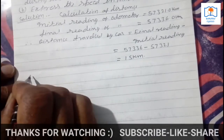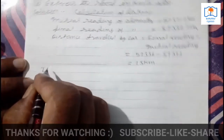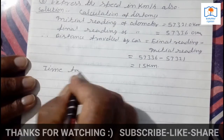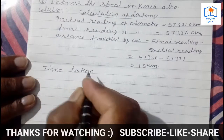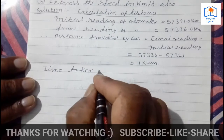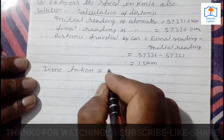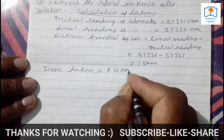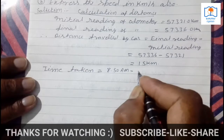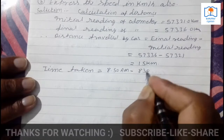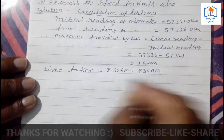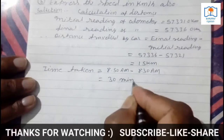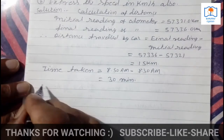Now how much time was taken? Time taken is 8:50 am minus 8:30 am, which equals 20 minutes. So the time taken is 20 minutes.